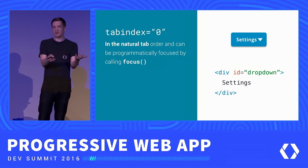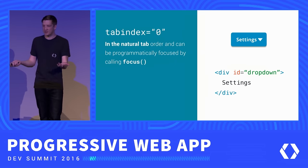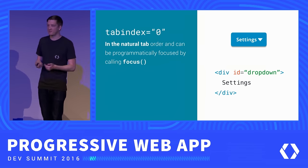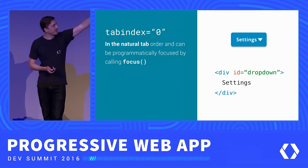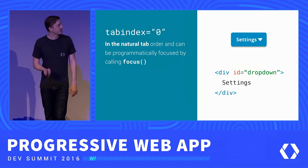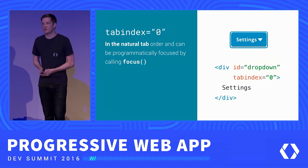A tabindex value of 0 inserts that element into the natural tab order, meaning someone can hit Tab and easily reach it. It also means you can call its focus method to programmatically focus it. Here I've got a very fancy custom button — right now if I press Tab, focus moves right past it. I give it tabindex 0, and now when I press Tab, focus lands on it and we're all good.